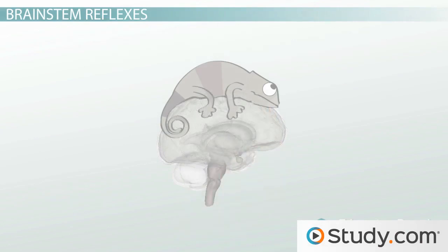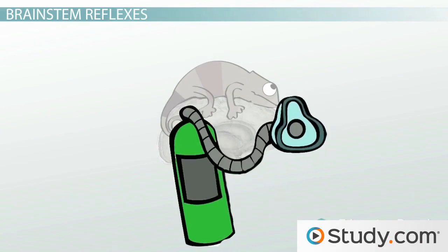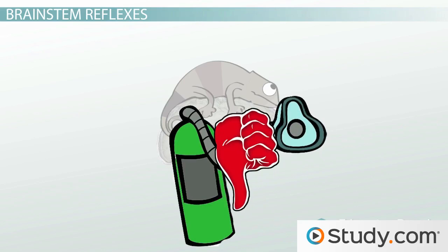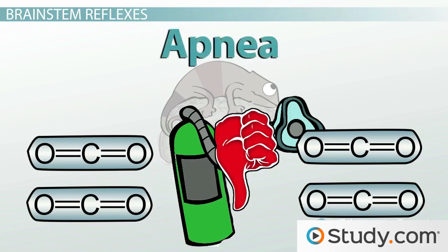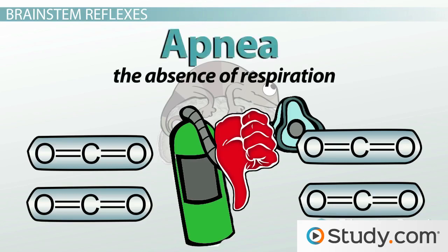Furthermore, another test to assess brain death is performed by disconnecting a person's ventilator, allowing carbon dioxide to build up in the body. This should normally force a person to breathe. However, a person experiencing brain death will undergo apnea, which is the absence of respiration. That's why this test is called the apnea test.